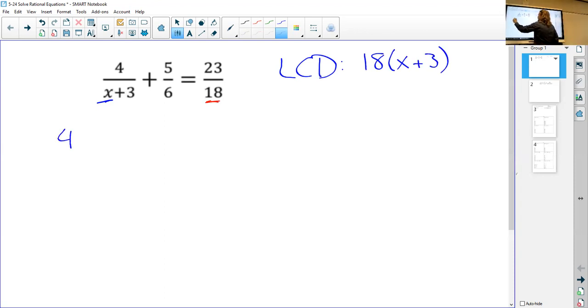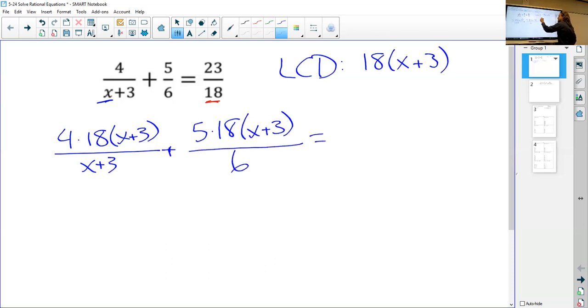But if we want to make this a little bit simpler, we say well, 18 is a multiple of 6. So instead of multiplying by 18 and multiplying by 6, we can just multiply by 18. So what we're going to do is we're going to say our least common denominator is 18 times x plus 3. I'm not actually sure if that's the least common denominator, but that's a common denominator that's good. So I'm going to take this value, and I'm going to multiply each of my three fractions by that. So our first fraction is going to be 4 times 18(x+3) over x+3.